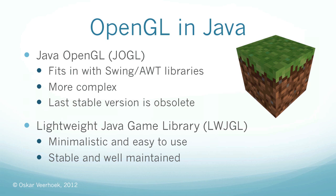The last stable version of JOGL is obsolete. It's still sort of being developed but it's all nightly builds and it's not really what I'd call extremely stable. And then you have the Lightweight Java Game Library, which is a very minimalistic and easy to use library. It's also stable and well maintained, so if you're just looking for a simple solution then the Lightweight Java Game Library is the way to go.